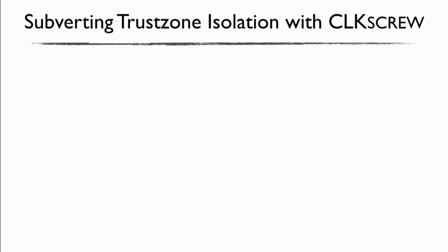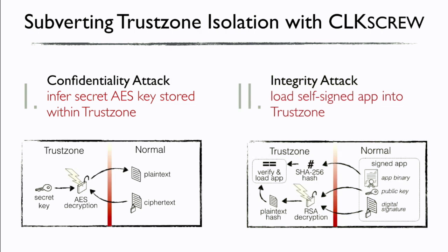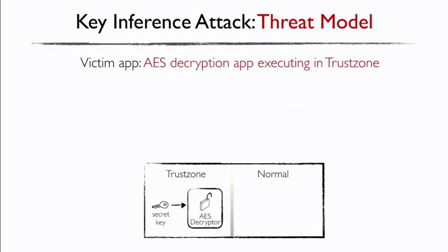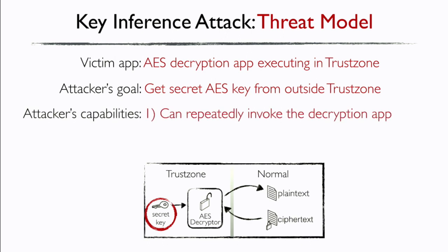We explored two attacks. In the first attack, we break confidentiality by inferring the secret AES key stored in TrustZone. The threat model: an AES encryption application runs within TrustZone using a secret key inaccessible from the normal world. The attacker outside TrustZone can repeatedly invoke this decryption application and has software access to the hardware regulators to inject faults during the decryption operation.